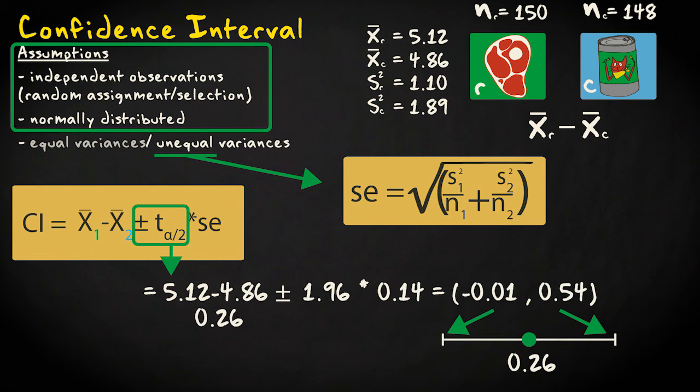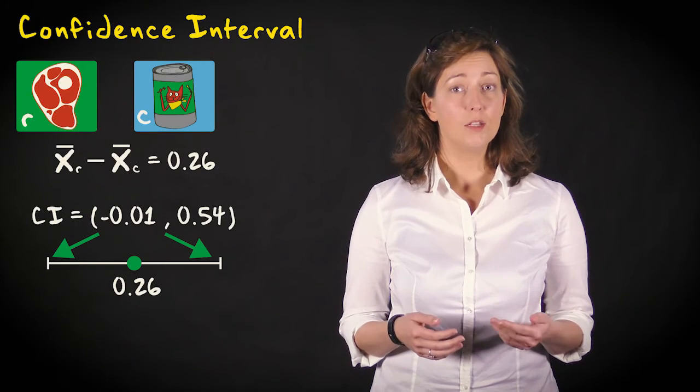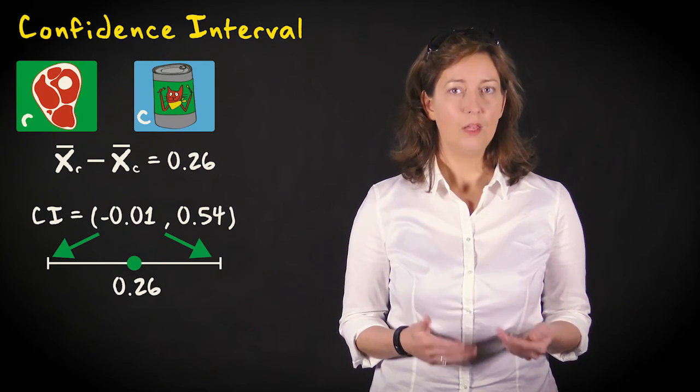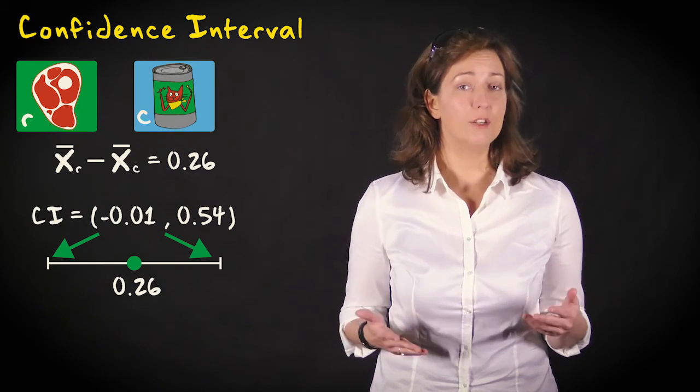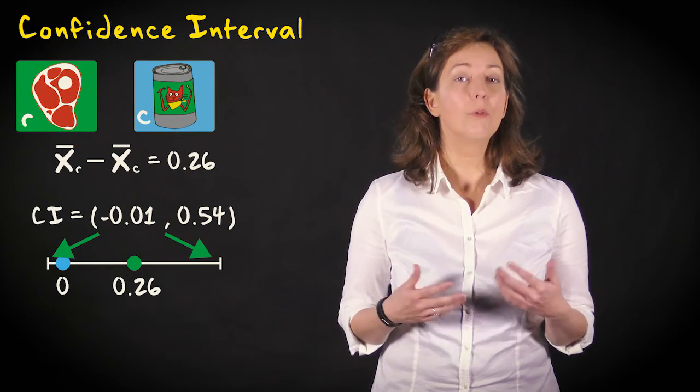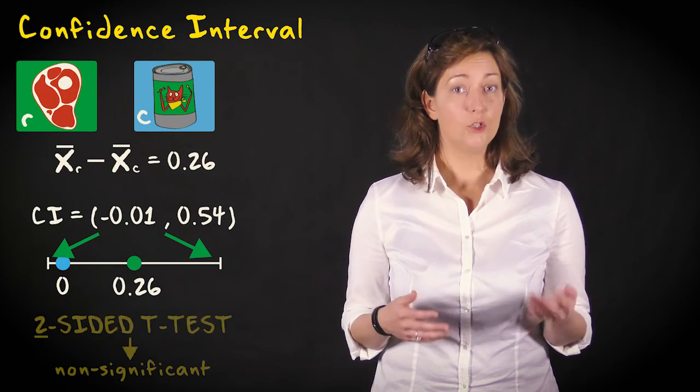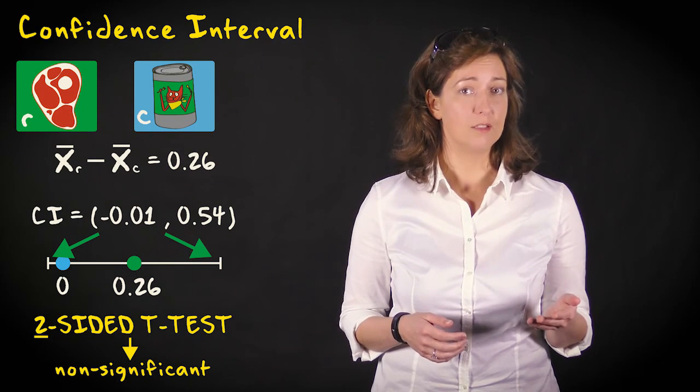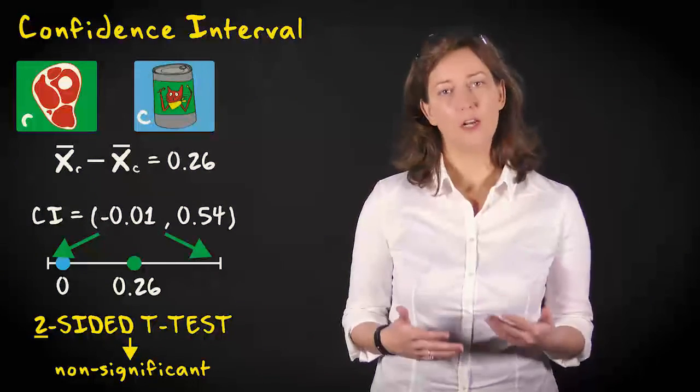The confidence interval for our example data is 0.26 plus and minus 1.96 times 0.14. This results in a confidence interval that ranges from minus 0.01 to plus 0.54. This corresponds to performing a two-sided test. Since the value 0, no difference in the means, lies inside the interval, 0 is considered a plausible value. This means a two-sided, more conservative test than the one we've performed would have been non-significant.